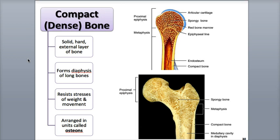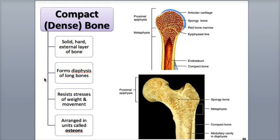Even though bone is very strong, it contains lots of microscopic spaces between its cells. These spaces allow passage of blood vessels and also store red bone marrow. Bone tissue is classified as either compact or spongy bone based on the size and distribution of these spaces. Most of the skeletal system is made of compact bone, about 80%, while the other 20% is spongy bone. Compact or dense bone tissue is the solid, hard, strong external bone tissue that contains few spaces. It is the weight-bearing tissue of bone, helping to protect and support, and forms most of the diaphysis or shaft of the long bone.